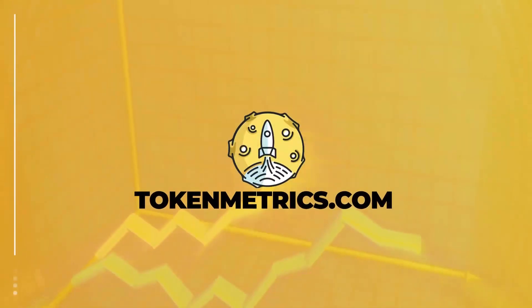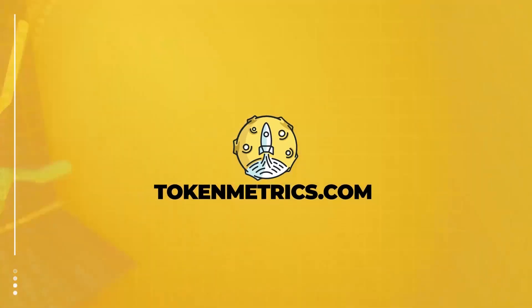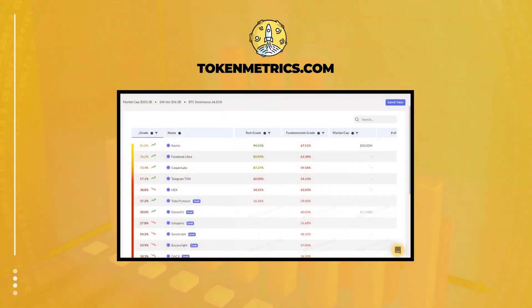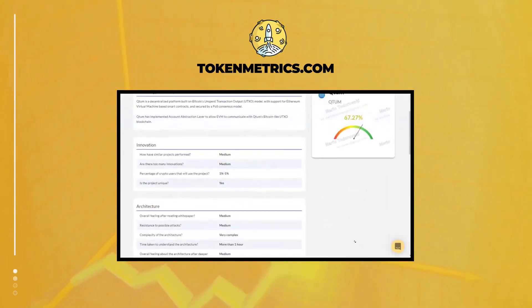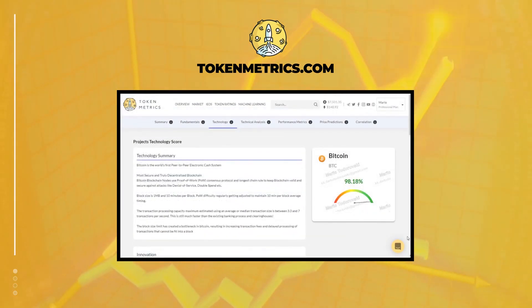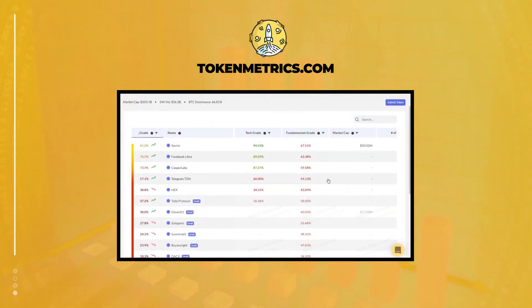TokenMetrics is a cryptocurrency investment platform that helps users leverage machine learning to become better crypto investors. Our in-depth analysis helps eliminate the emotions of investing, find profitable investment opportunities, and filters out scams. Learn more at tokenmetrics.com.